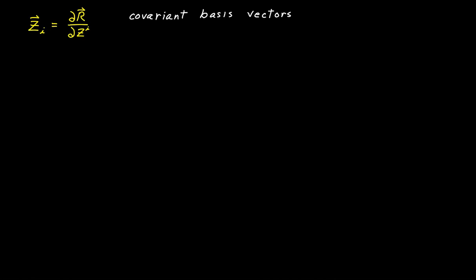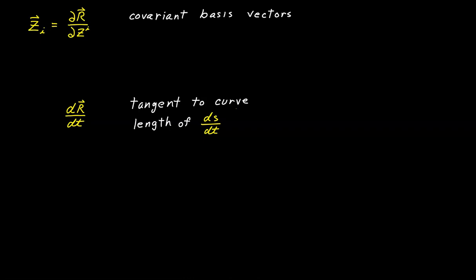To do that, let's recall something we discovered back in video number 8. We discovered that if we have some curve through space defined by some parameter t, and we take the derivative of our position vector with respect to t, what we get is a vector that is tangent to the curve, and the length of this tangent vector is equal to ds/dt. If our parameter is s, the actual arc length, then ds/ds is just 1, giving us a unit vector. But in general, the length of the tangent vector is equal to ds/dt.